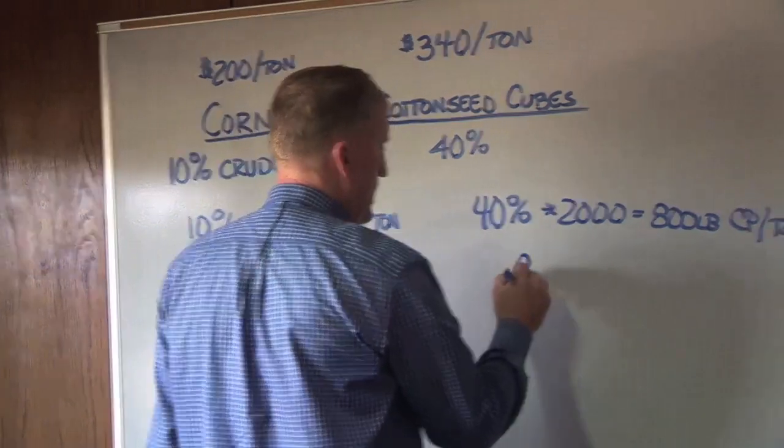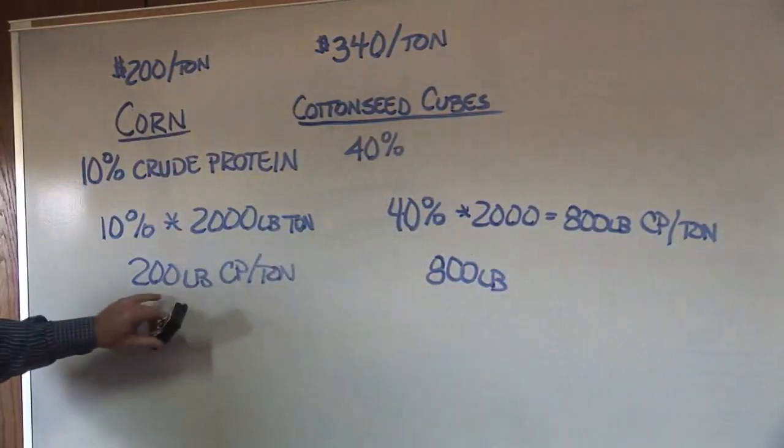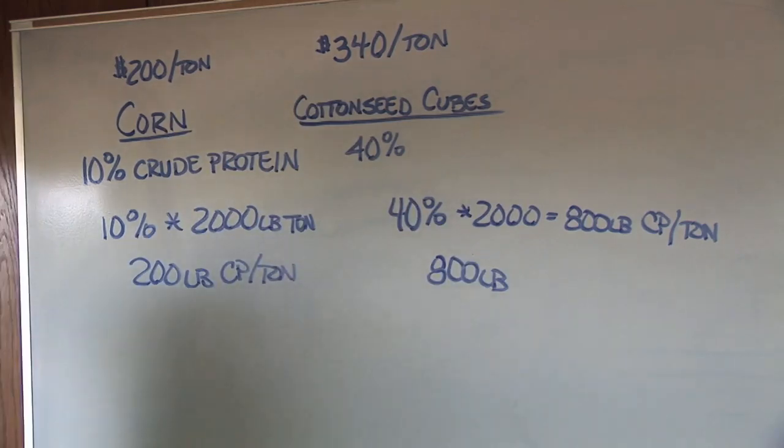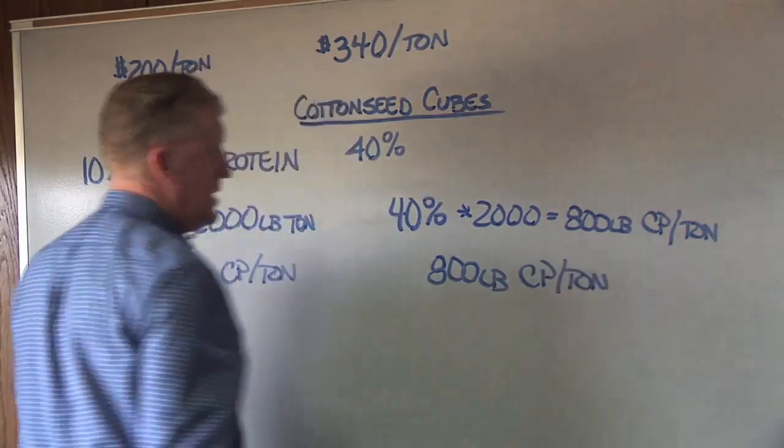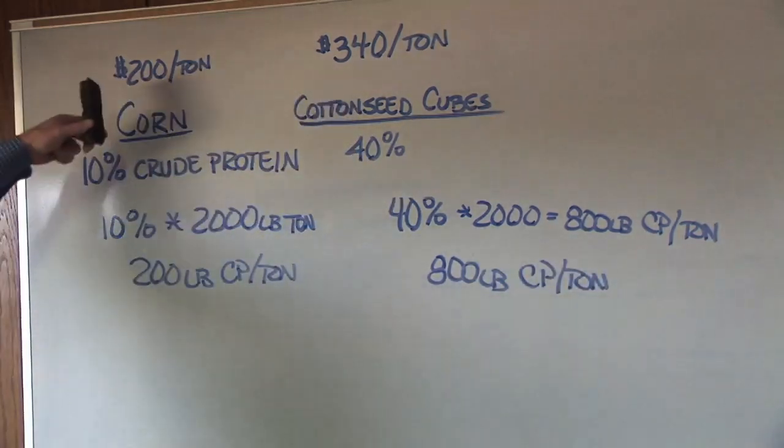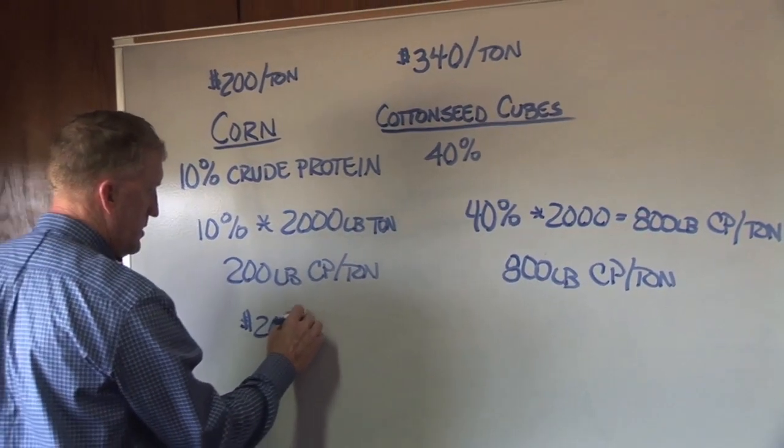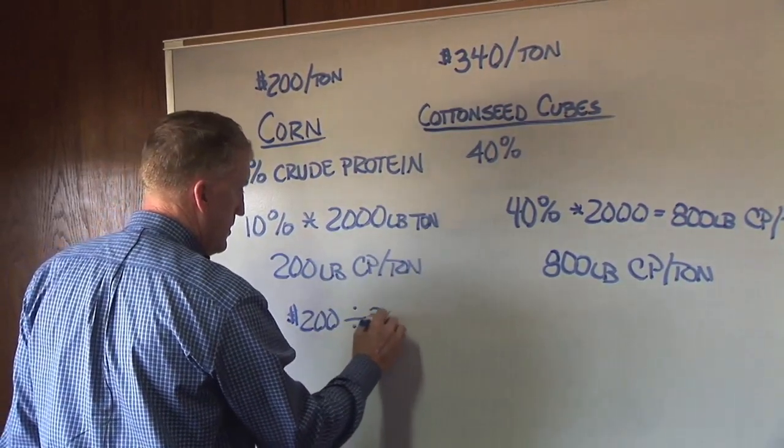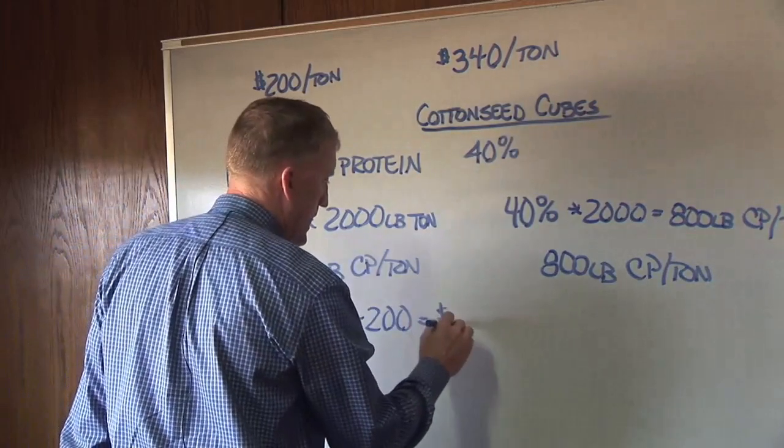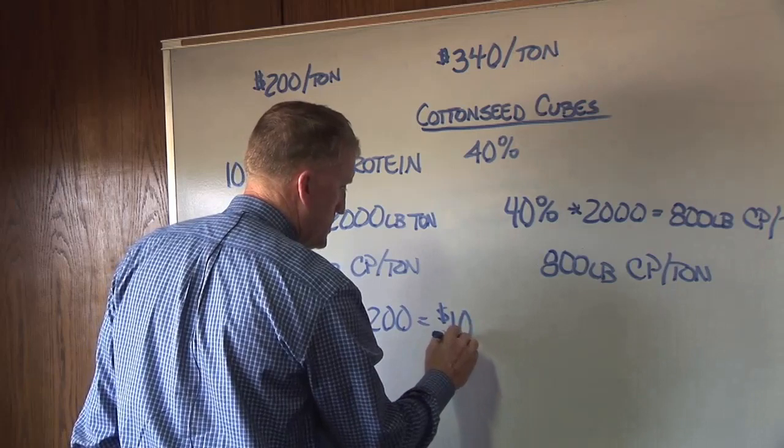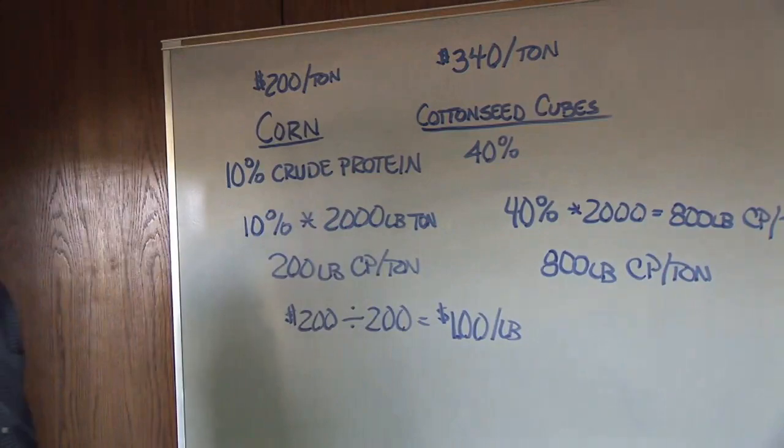And so now we have them on the same basis, 200 pounds of protein per ton of corn, 800 pounds of crude protein per ton of cottonseed cubes. So then we take the price, in this case $200 per ton, divided by the 200 pounds, and we find out that works out to, in this hypothetical example, essentially $1 per pound of crude protein. Simple enough.